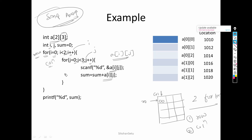This loop will be executed six times. Why six times? Because the inner loop executes three times and the outer loop executes two times — two threes are six. So six different values will be scanned, and finally we can get the output on the screen.